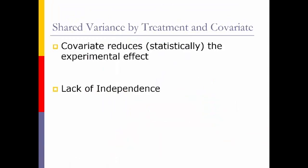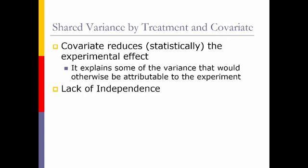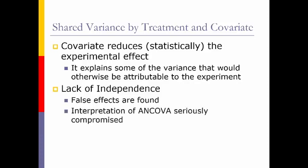If you do have shared variance between the covariate and the experimental effect, you're really reducing the experimental effect, which is not what we want. You'd be explaining variance that would otherwise be attributable to the experiment. A lack of independence also means we're going to find false effects, and false effects means you really can't interpret the outcome of your ANCOVA. We want the covariate to be within the unexplained variance alone.